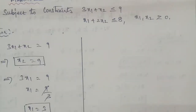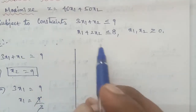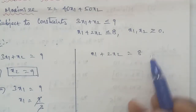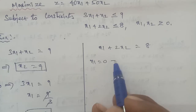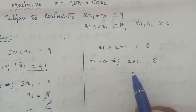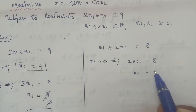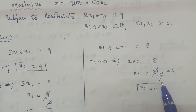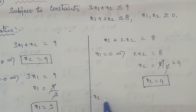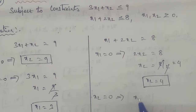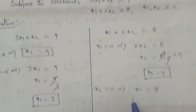Second equation subject to constraints: x1 plus 2x2 less than or equal to 8. When x1 is equal to 0, substituting: 2x2 is equal to 8, x2 is equal to 8 by 2, x2 is equal to 4. Next, when x2 is equal to 0, 2 into 0 is 0, so x1 is equal to 8.